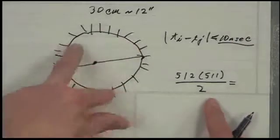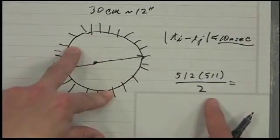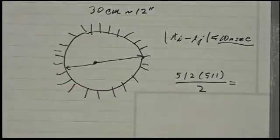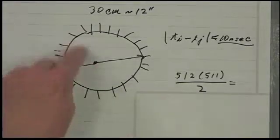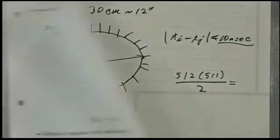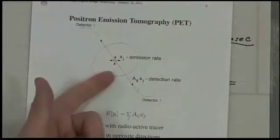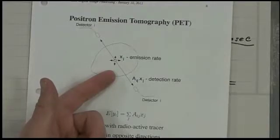Because that's all the unique pairs you have of detectors. So for every unique pair of detectors, you have a virtual detector. You count how many annihilations occurred along that detector, and you get a line integral. So you get a line integral.